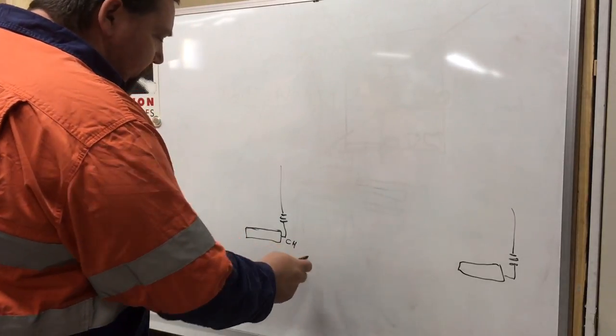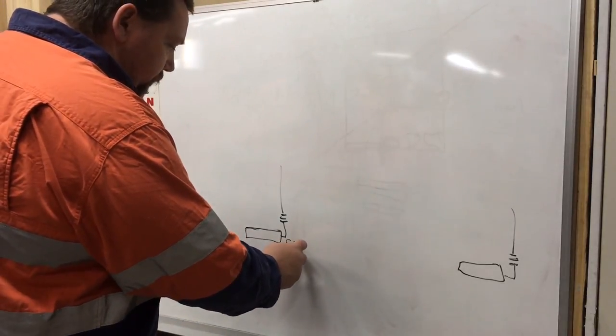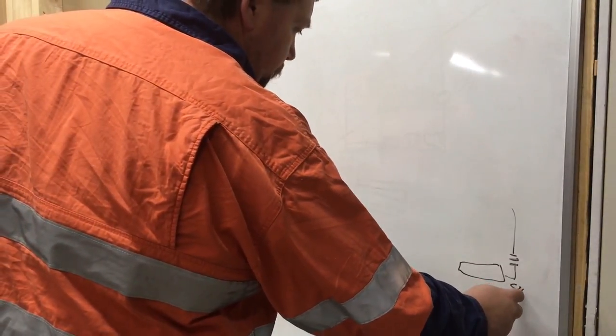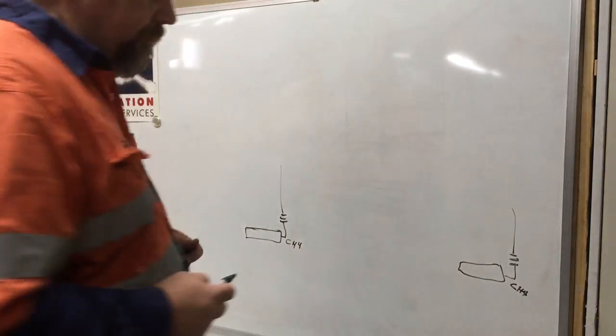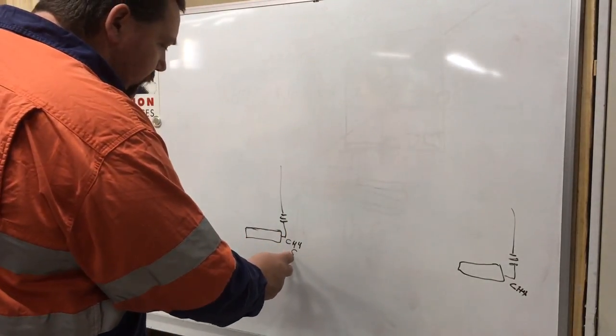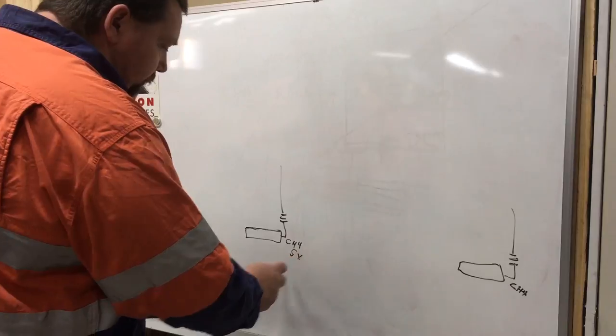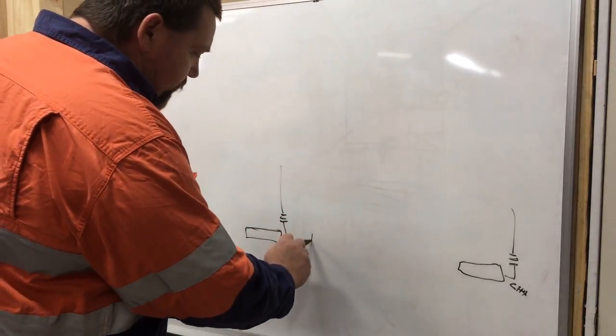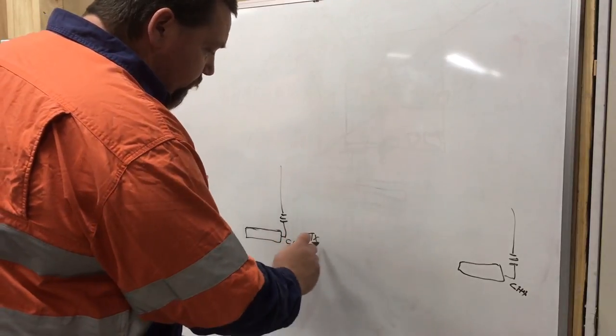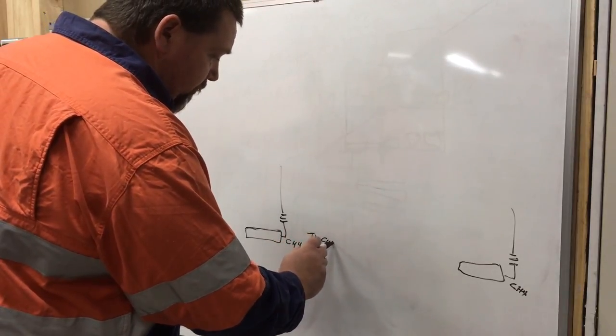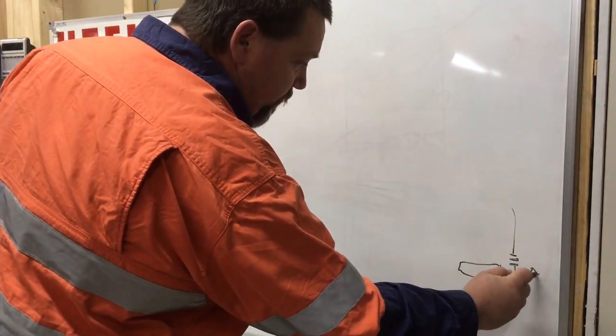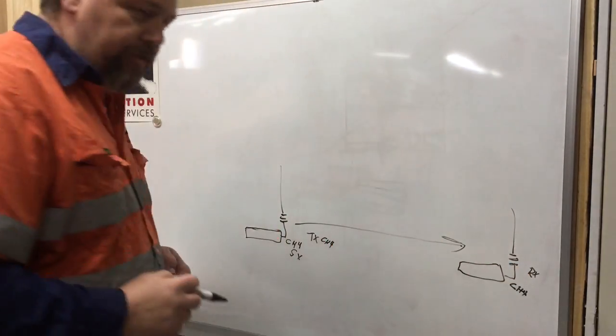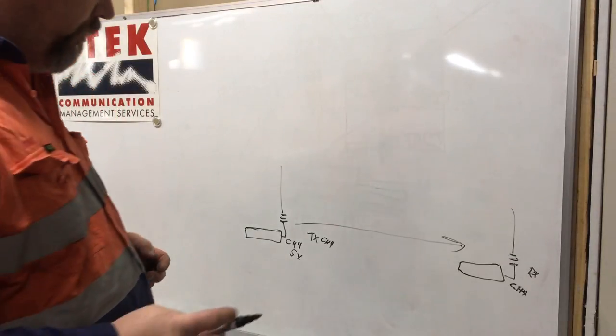So, in this particular instance, we're going to do a demonstration and say we're on channel 4 on this radio, and we're going to say we're on channel 4 on this radio. This radio will have its radio configured in simplex mode, and which that means that when it transmits, it transmits on channel 4, and the receiving radio will receive it on channel 4. So, you have a direct line of sight, direct communications between the two.